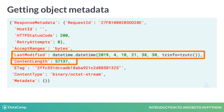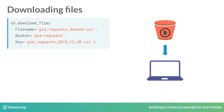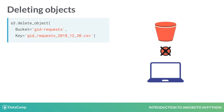To download a file, we use the client's download file method. We pass the file name or the local path we want the file to download to. Then we specify the bucket and key of the object we want to download. Sometimes an object has outlived its usefulness and needs to be deleted. Use the client's delete object method, passing the bucket name and object key to delete the object.